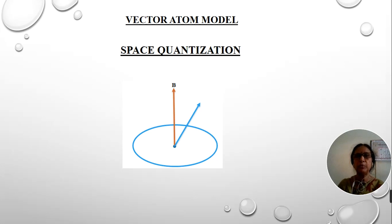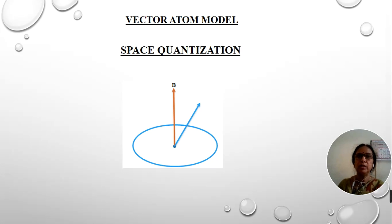In order to explain these new phenomena and also the anomalies in the previous atom models such as Bohr's theory and Sommerfeld's relativistic atom model, the vector atom model introduces two new concepts: one is space quantization, and the other one is the spinning electron hypothesis.